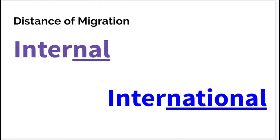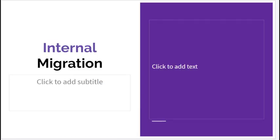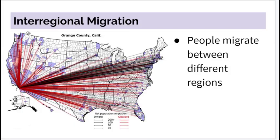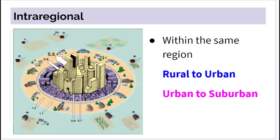We also distinguish two ways to divide migration: internal versus international. For internal migration, we look at inter-regional migration — movement across different regions within the United States, such as from Southern California to the Pacific Northwest, or from Texas to the Northeast — examining the push and pull factors driving people between those regions.